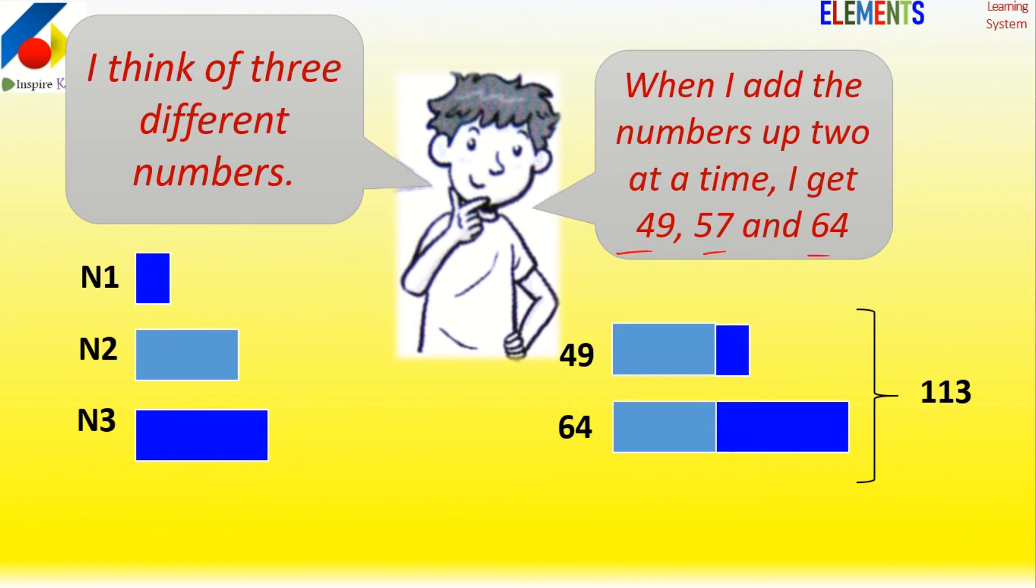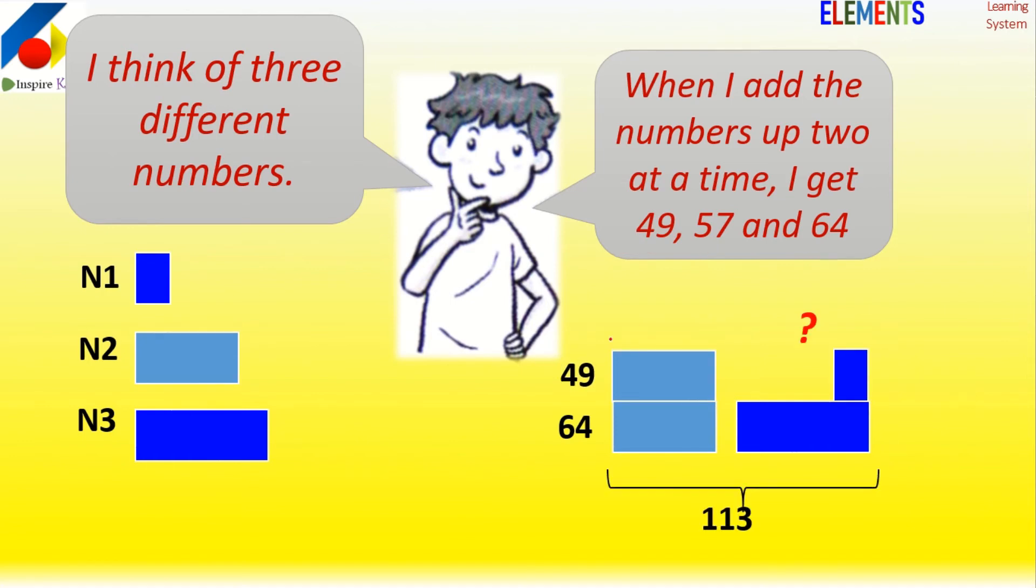113. If we visualize this, we can use a part-part-whole problem. This is 49, this is 64, and this is 113 minus this minus this, so there's something here. Now if this has come, then we will subtract this, so you get the quantity of this. And half of this is this. Simple: if you find one, you can find another.